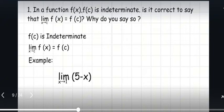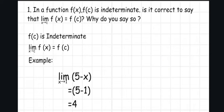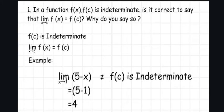Here are our examples. Limit of 5 minus x as x approaches 1. We substitute the number 1 in place of x. The equation becomes 5 minus 1, and 5 minus 1 is equal to 4. Since f(c) is indeterminate, we can say here that f(x) is not equal to f(c) because the limit of f(x) has a limit of 4, while f(c) is indeterminate.